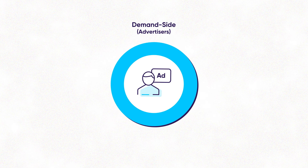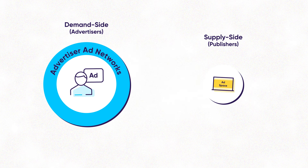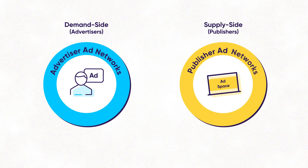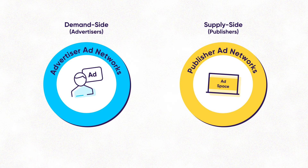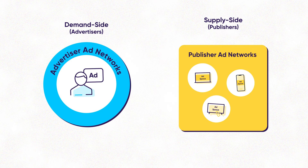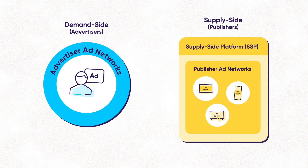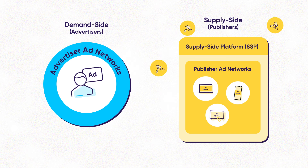We can break down the programmatic ecosystem into the demand side and the supply side. On the demand side, you have advertisers looking to buy ad space for their campaigns to reach their target audience on ad networks. The supply side is the publishers — app or website owners with inventory to sell. Publisher ad networks gather the available inventory so it can be matched to the right advertiser.